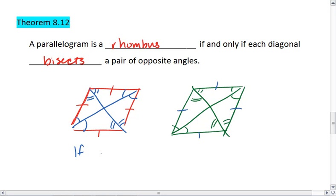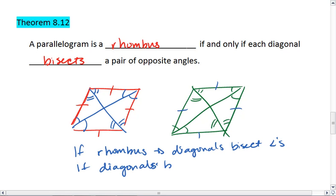So if rhombus, then diagonals bisect angles. And if diagonals bisect angles, then it's a rhombus. Again, that's because it's an if and only if—it works in both directions.